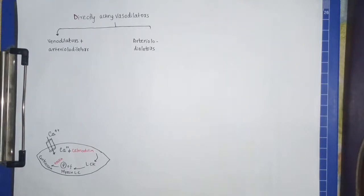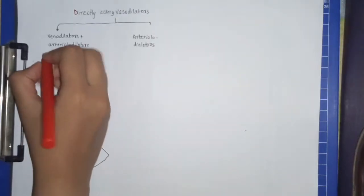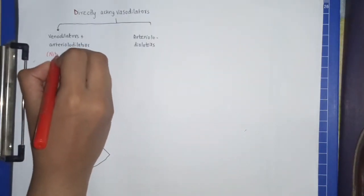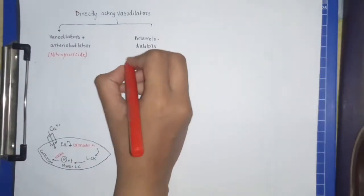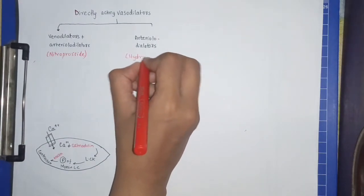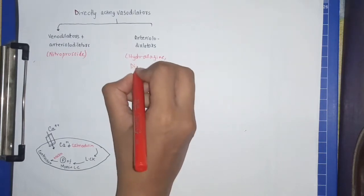This group of drugs which I would like to mention is directly acting vasodilators. Basically, they can be two types of dilators. They can be a group which dilates arteries as well as veins, and the other group which dilates only your arteries. Classical example of this group of drugs is nitroprusside, and here is hydralazine or diazoxide.